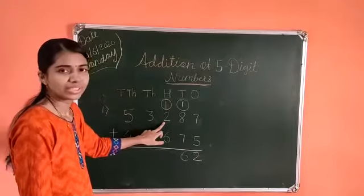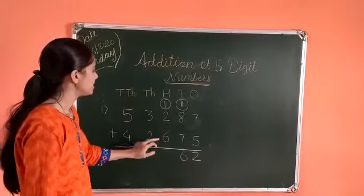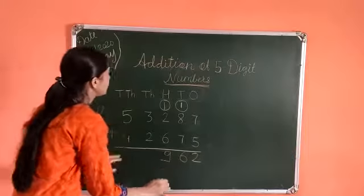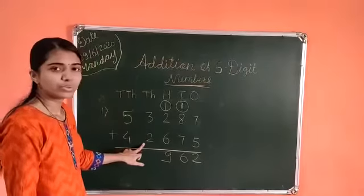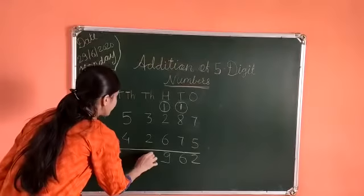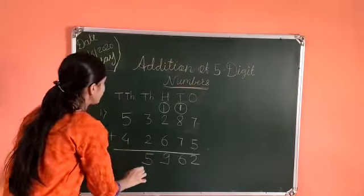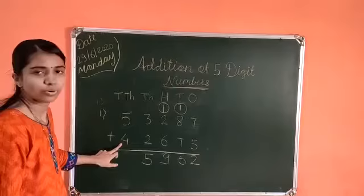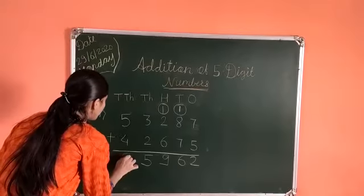1 plus 2 is 3. 3 plus 6 equals 9. 3 plus 2 equals 5. And 5 plus 4 equals 9.